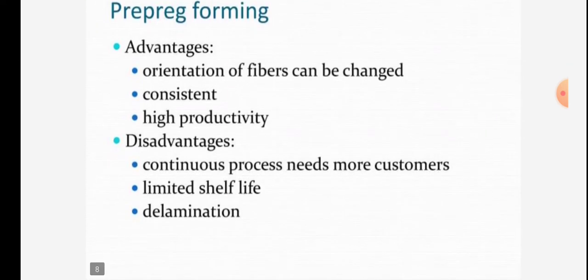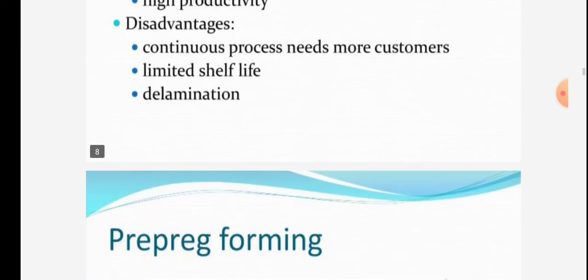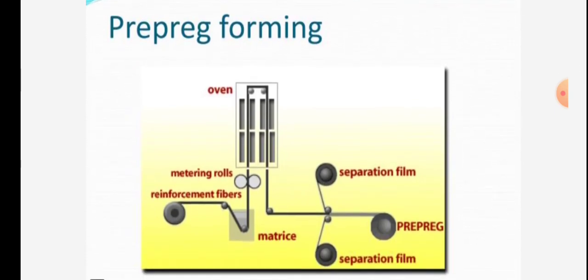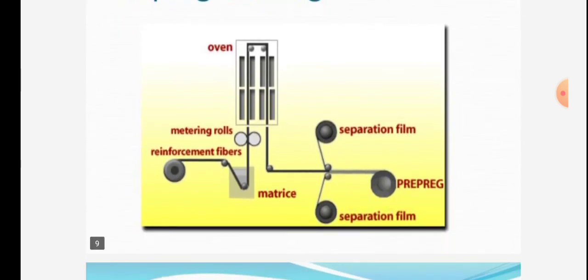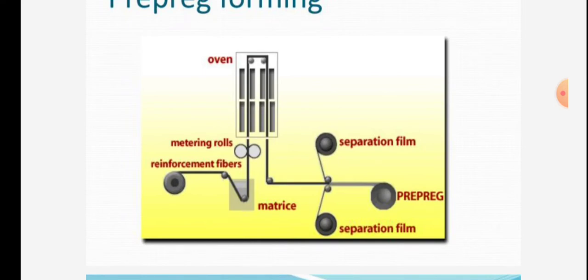Prepreg forming process advantages are orientation of fibers can be changed, consistent process, and high productivity. Disadvantages are continuous process needs more customers, limited shelf life, and delamination. The figure shows prepreg forming process with oven.